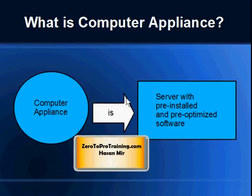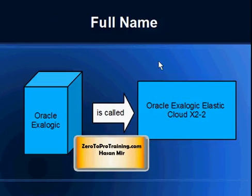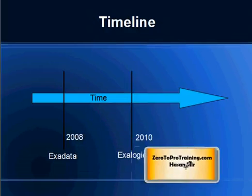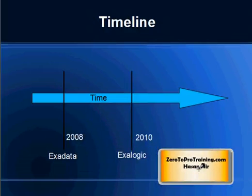Now we know what an appliance is. Oracle ExoLogic's full name is Oracle ExoLogic Elastic Cloud X2-2, and they now have Cloud X3. At a high level, ExoLogic was born in 2010, and its younger brother ExaData was born in 2008. I have covered the details of ExaData in another video; this video is about ExoLogic.